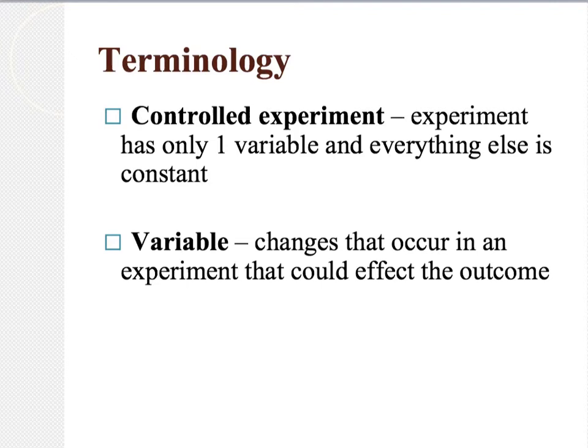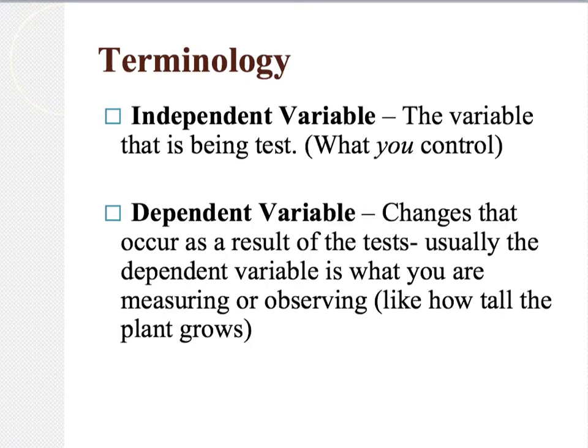Now let's look at some terminology and vocabulary. A controlled experiment is an experiment that has only one variable and everything else is constant or stays the same. A variable is any change that occurs in an experiment that could affect the outcome. An independent variable is the variable being tested — it's what you control and change.